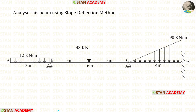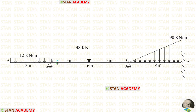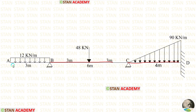Hello everyone. Today we are going to analyze this beam using the slope deflection method. Before analyzing, let us see the beam one time. In this beam, there are two spans: span BC and span CD. There is also an overhanging span AB.